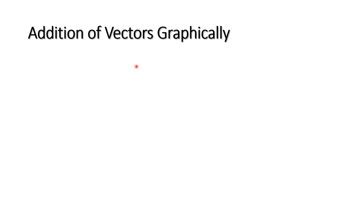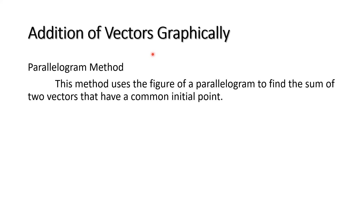Let us now do the addition of vectors graphically, or manually. In this lesson, I'll be discussing the addition of vectors using the parallelogram method. This method uses the figure of a parallelogram to find the sum of two vectors that have a common initial point. Let's say we have vector A with an initial point and arrowhead, and at the same initial point we have vector B going towards the east direction, with the magnitude of vector B greater than vector A. We then form a parallelogram by adding two more sides parallel to both vectors A and B.